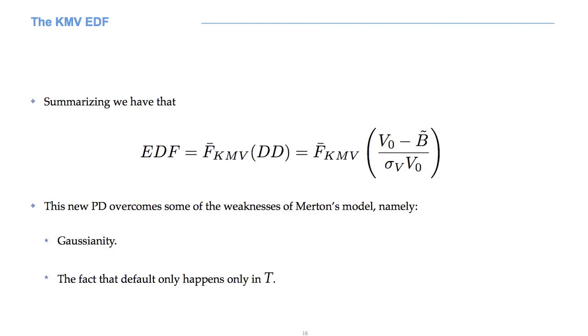An important assumption of the KMV model is that companies having the same distance to default have the same probability to default, that is to say, the same EDF.